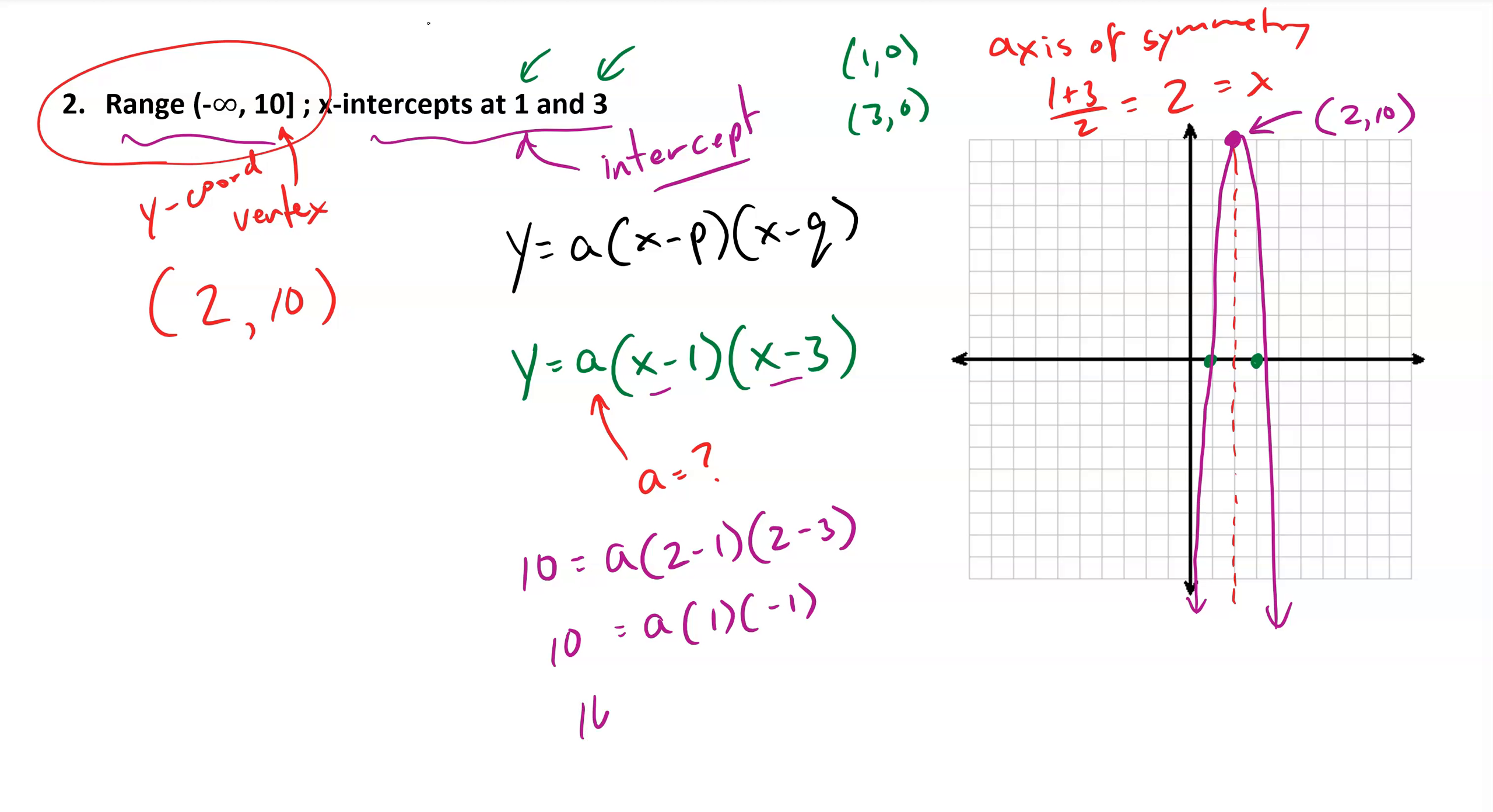If I solve for a, I end up with a times positive 1 times negative 1 on the right-hand side, so 10 equals -a, so a must equal -10. And putting that all together, I get an equation for the quadratic: y equals -10(x minus 1)(x minus 3).